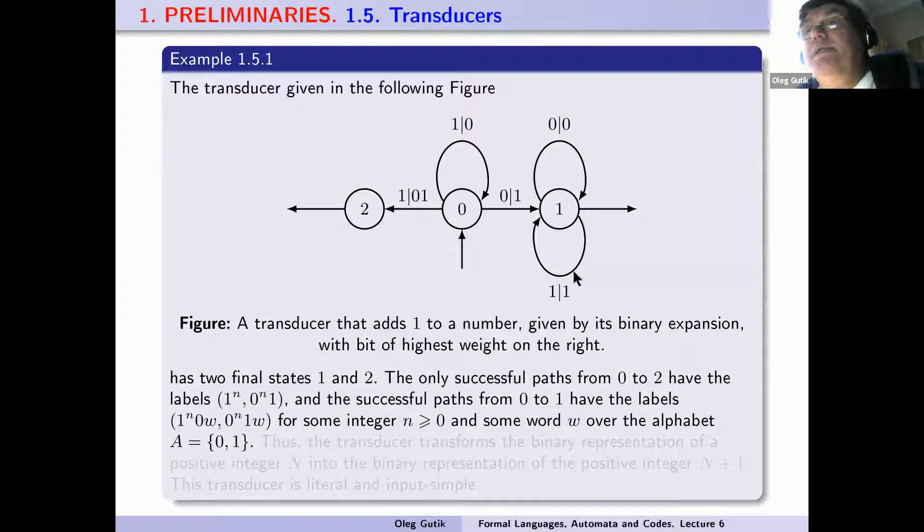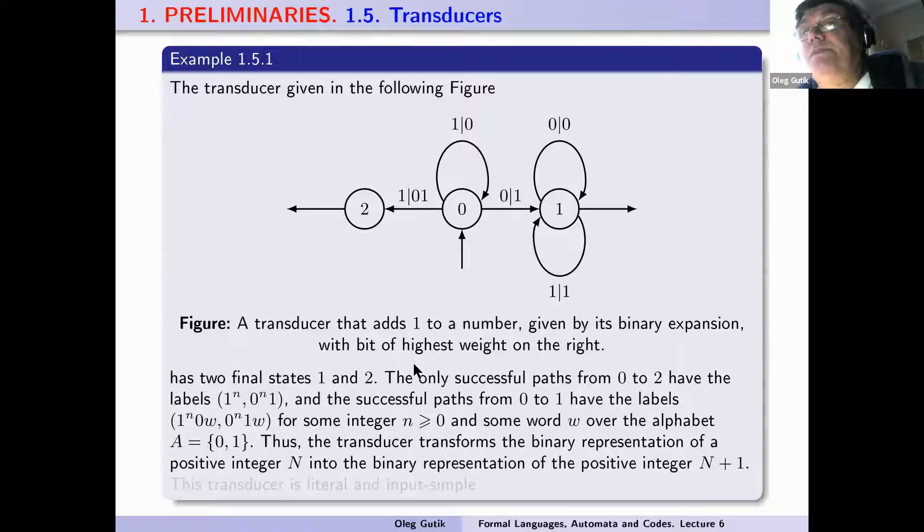The labels are 1^n|w and 0^n|w1 for some integer n greater than or equal to zero and some word w over the alphabet consisting of elements 0 and 1. So if we go inside the loops, we get 0|0 or 1|1 for some word w over this alphabet.